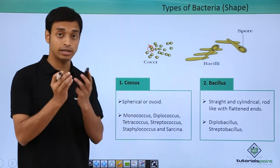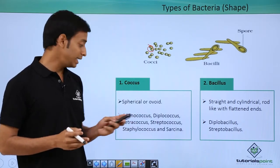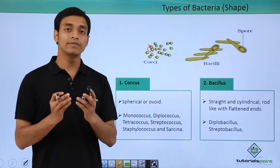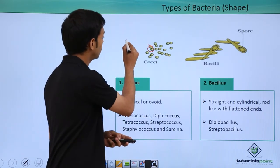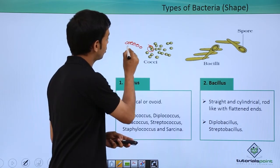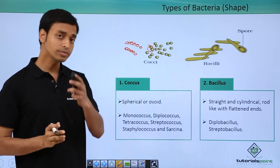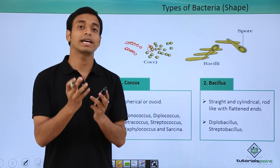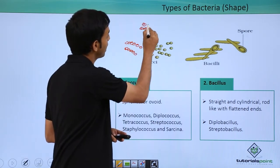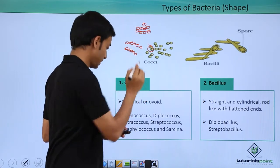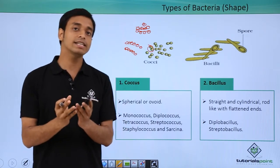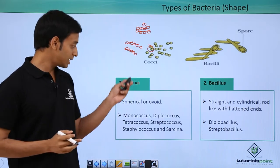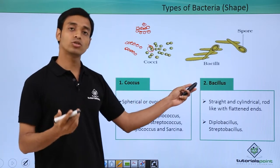Next is diplococcus, where two cells are paired together. Then tetracoccus, where four cells come together. Streptococcus occurs in chains as you can see. Staphylococcus forms groups like bunches of grapes — a bunch-like structure. And lastly, sarcina forms three-dimensional geometric shapes. These are all the coccus varieties.